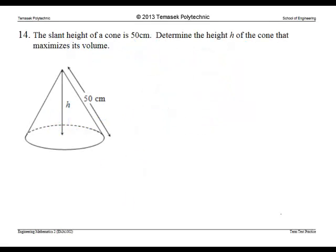The last question, number 14, is an optimization problem. We are given that the slant height of the cone is 50 centimeters. We are asked to find the height of the cone that maximizes the volume.